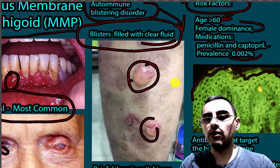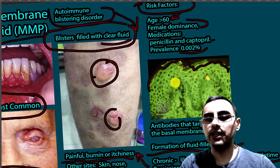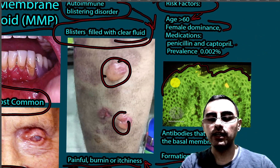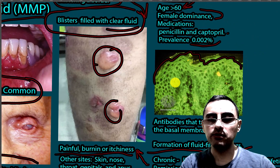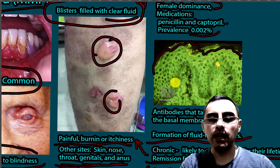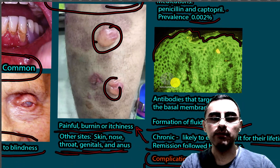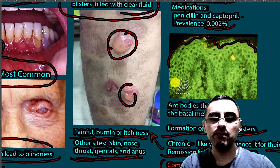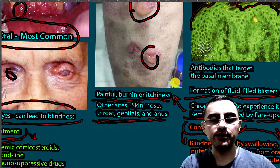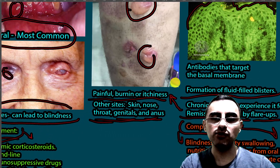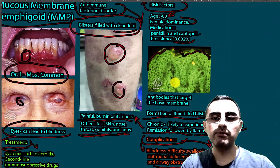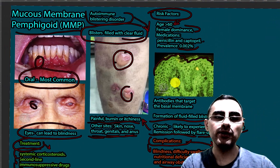Usually it occurs after age 60 and it is an autoimmune disease. These blisters can be painful and we treat it with immunosuppression.